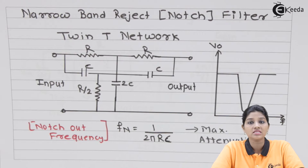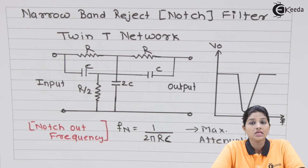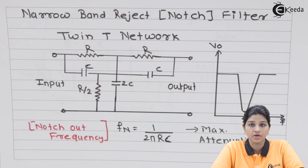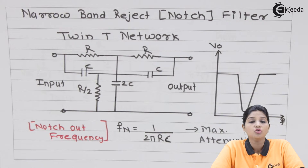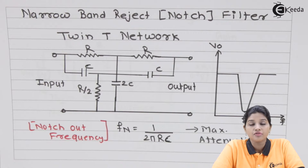Band reject filter, as its name indicates, rejects a particular band of frequency and allows all the frequency beyond the rejection band. In case of band reject filter, there is one stop band and two pass bands. To differentiate between pass band and stop band, two frequencies are required to be defined: FH and FL.